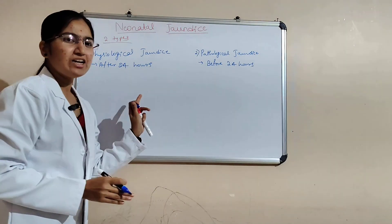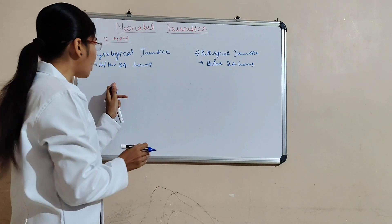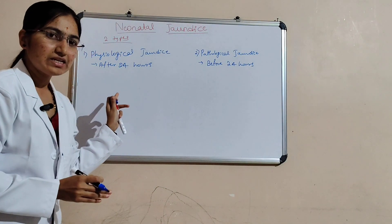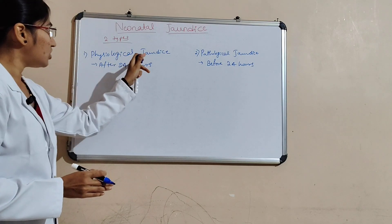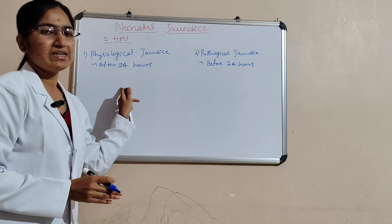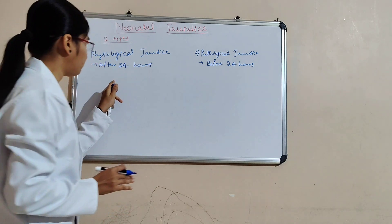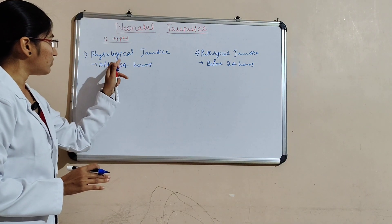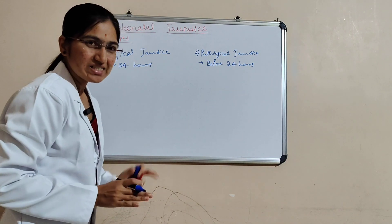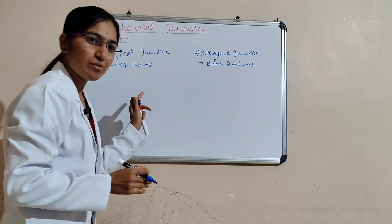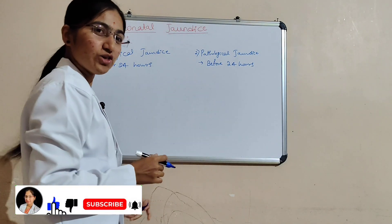Physiological jaundice is not a disease — it is a normal physiology. It appears after 24 hours and then it is going to disappear. It is a normal physiological phenomenon.